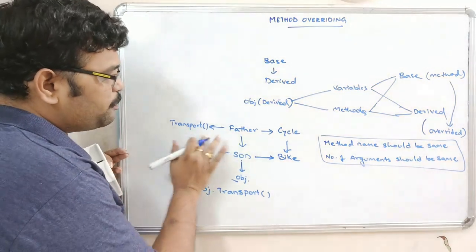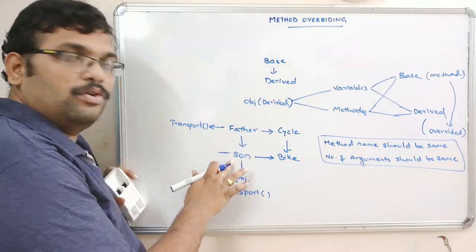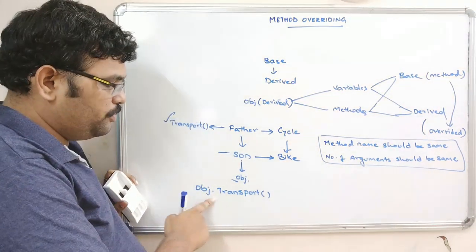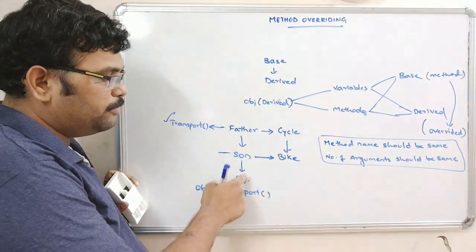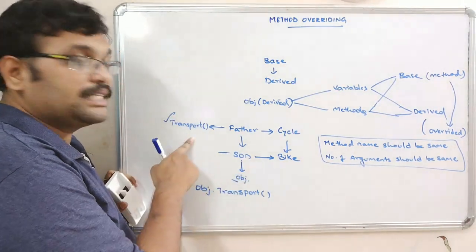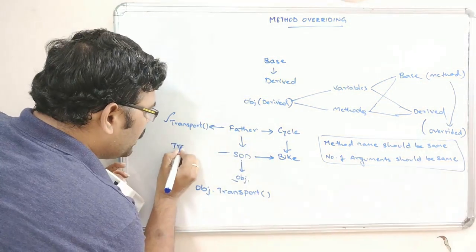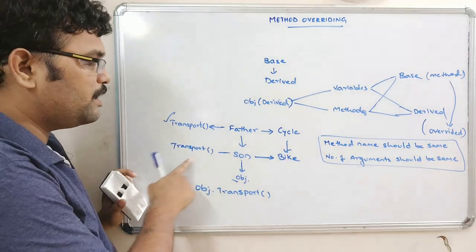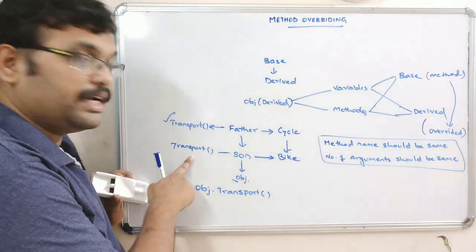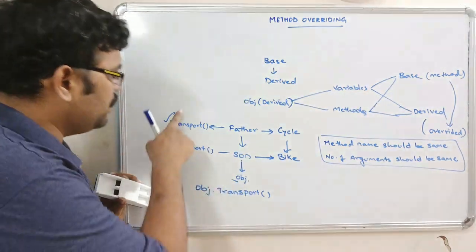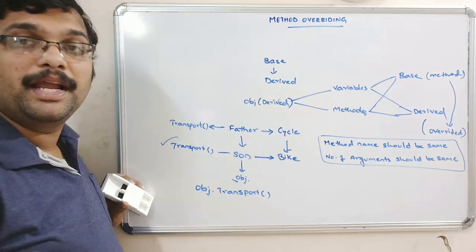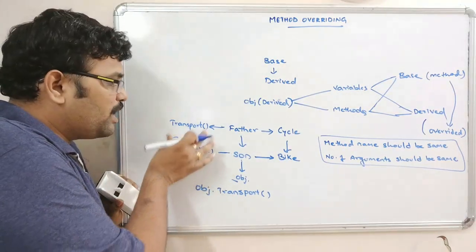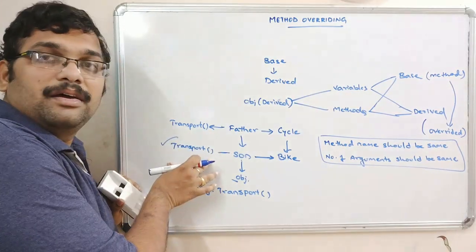We are writing only the transport method in the base class with no method in the derived class — then automatically it will be executed if you create a derived class object. Once you override this method in the derived class, the derived class method will be executed and the base class method will not. This is the latest method which is overridden from the base class.